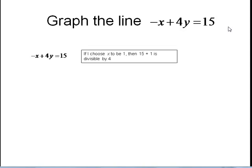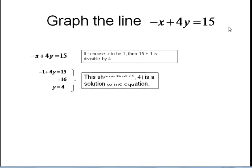When we do point plotting we choose a value for one variable and solve for what the other variable has to be. I'm choosing x to be 1 because 15 plus 1 is divisible by 4. So negative 1 plus 4y equals 15. Solving for y, we get 4y equals 16 after adding 1 to both sides, and dividing by 4 gives y equals 4. This tells me the ordered pair (1, 4) is a solution to the original equation.